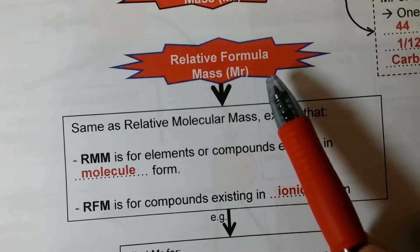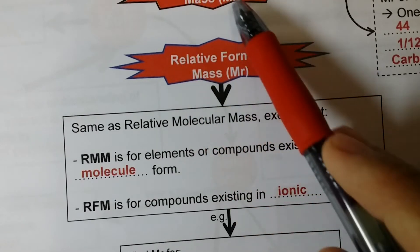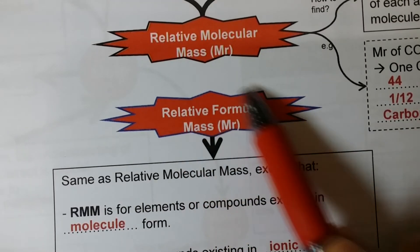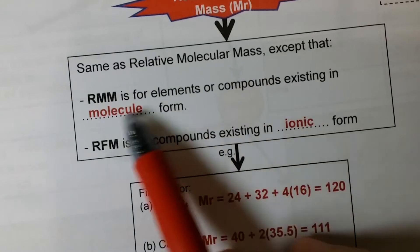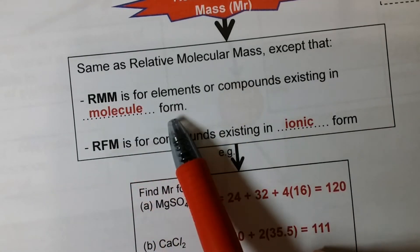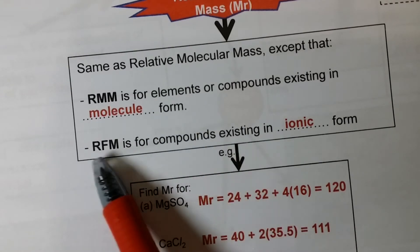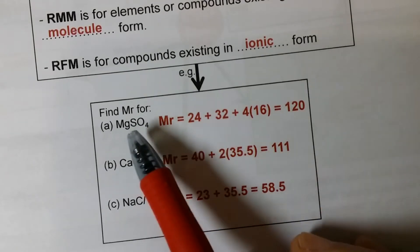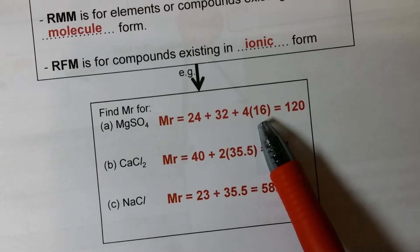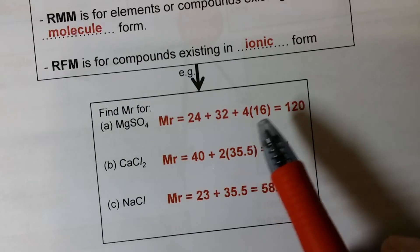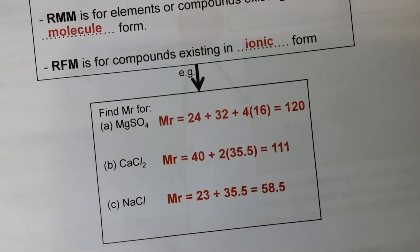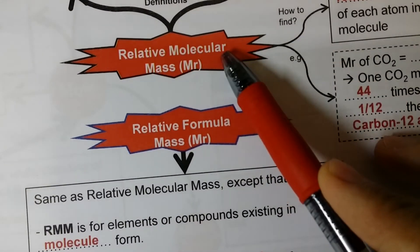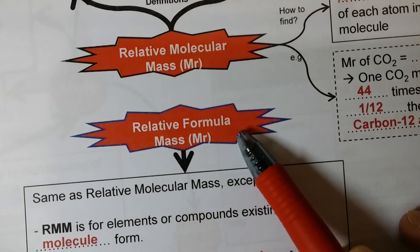How about relative formula mass? Relative formula mass — also shortened to MR — is for ionic substances. The short form is the same as relative molecular mass, but the terms are slightly different: 'molecular' is for covalent substances (non-metal + non-metal), while 'formula' is for ionic substances (metal + non-metal). The method of calculation is the same — add up all the individual AR values.